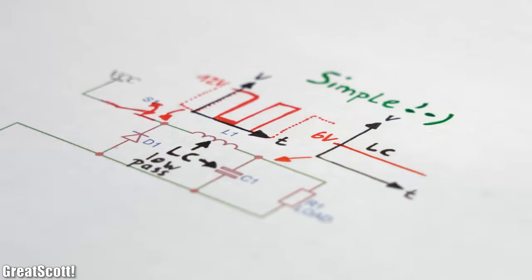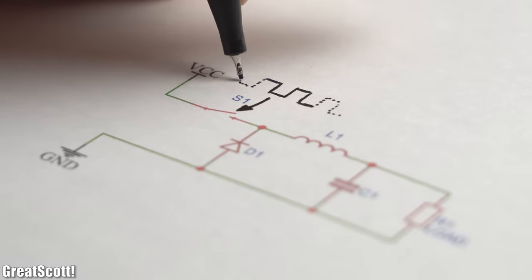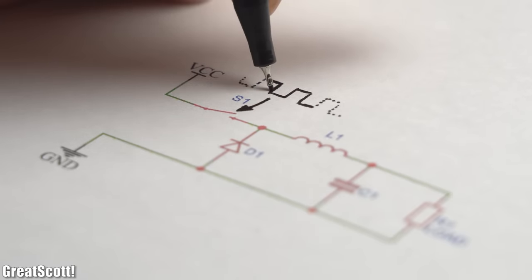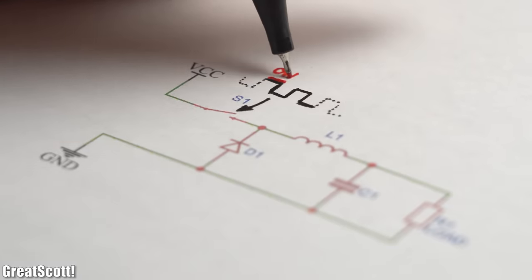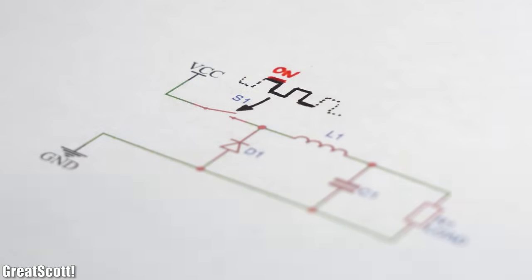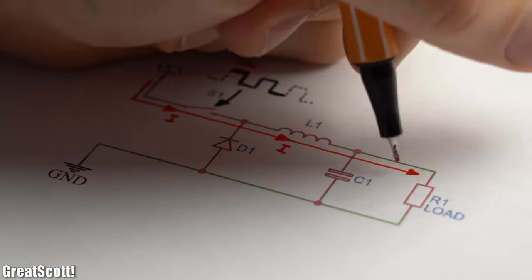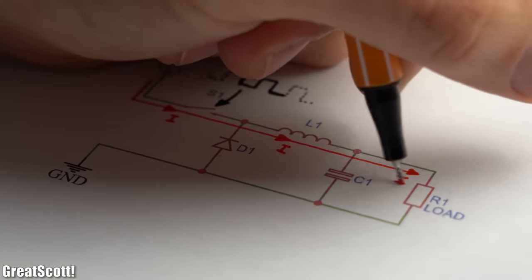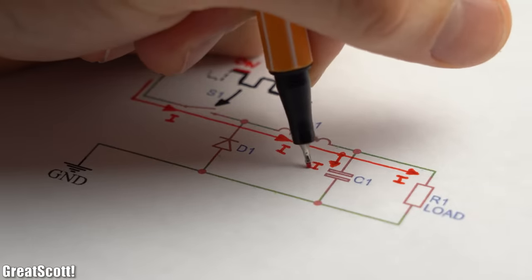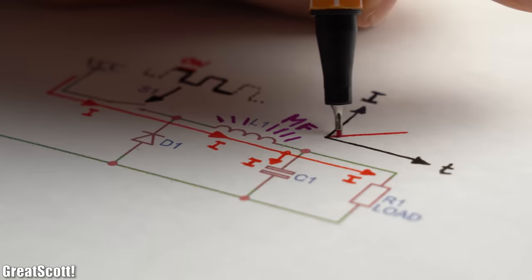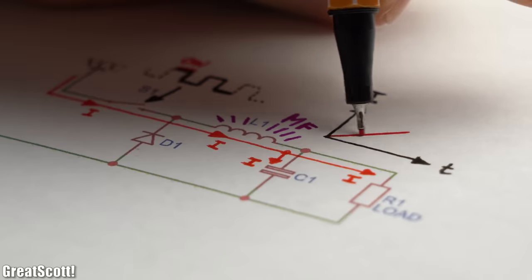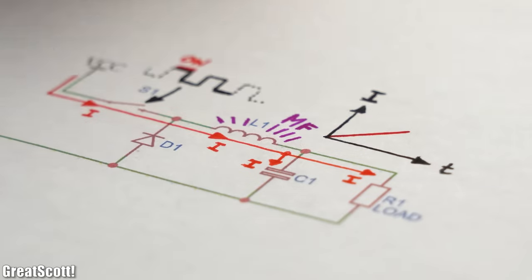To be more precise and accurate, let's imagine the switch really gets controlled by a high frequency PWM signal, and right now it is closed. Current flows through the circuit and supplies the load while charging up the capacitor and building up a magnetic field around the inductor, which by the way opposes the flowing current and thus only lets it rise slowly.